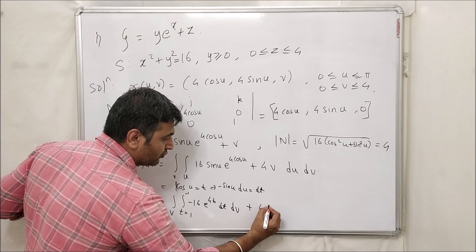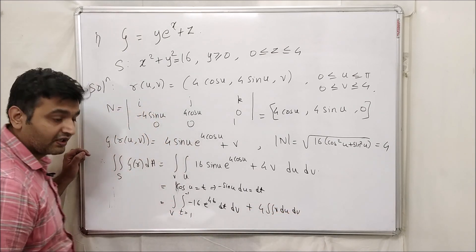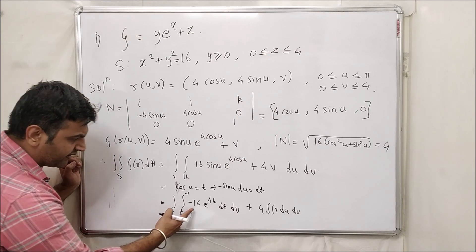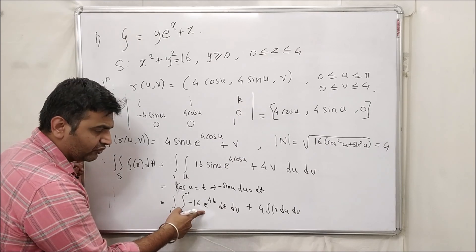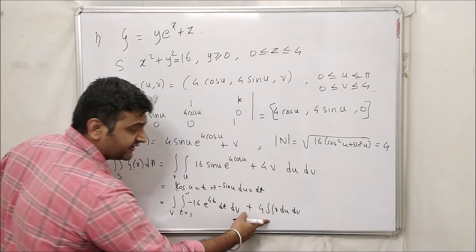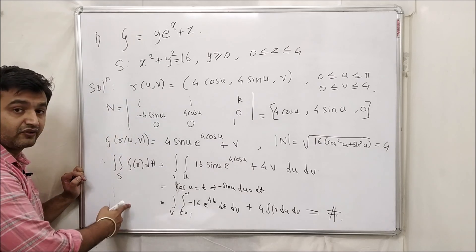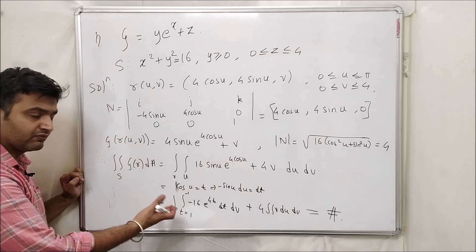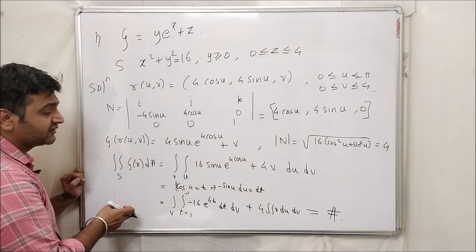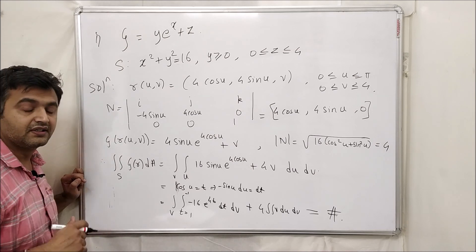So e raise to 4t dt and then dv as it is, plus 4 integration v du dv. And now I think it's a solvable, right? Minus 16 will come outside. You know what is the integration over here. And yeah, and this is also easy integration. So your first homework is you have to tell me the answer for this question. So I have done most of the part, so tell me what is the surface integral for this question?